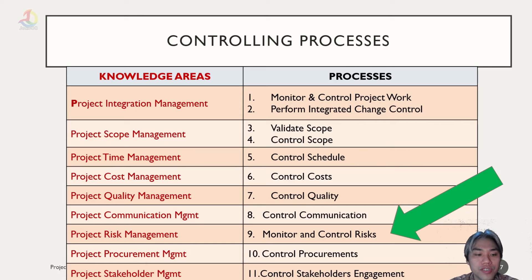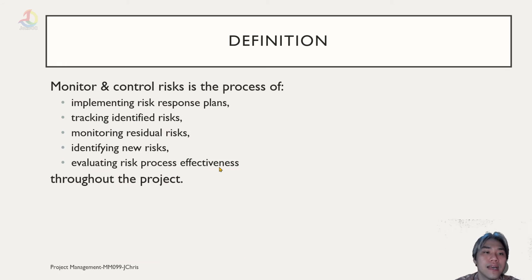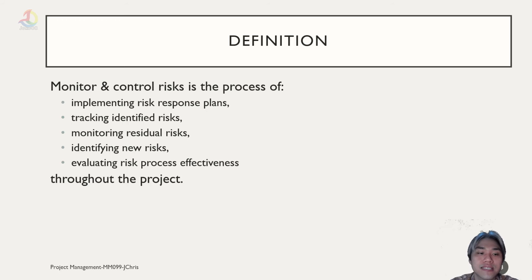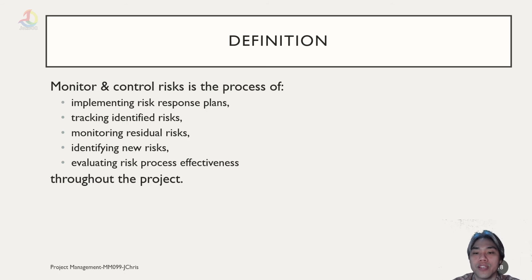The monitoring and control risk process in project risk management has one process in the control group, called Monitor and Control Risk. It is the process of implementing risk response plans, tracking identified risks, monitoring residual risks, identifying new risks, and evaluating risk process effectiveness throughout the project. This is an almost non-stop process until we can make sure there are no further risks to take into consideration.